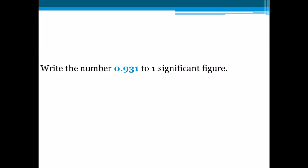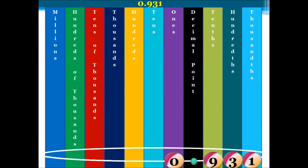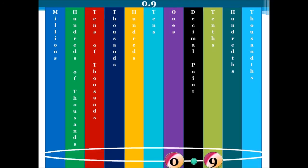Let's look at another question. This question reads: write the number 0.931 to one significant figure. Let's set up our table. Our first significant figure is 9. We look at the number that follows — in this case, we're looking at 3. Is this number greater than or equal to 5? Our 3 is less than 5, so we leave our 9 just as it is. We must drop our 3 and our 1. Dropping them does not change the place value of our 9, so our new number is 0.9.